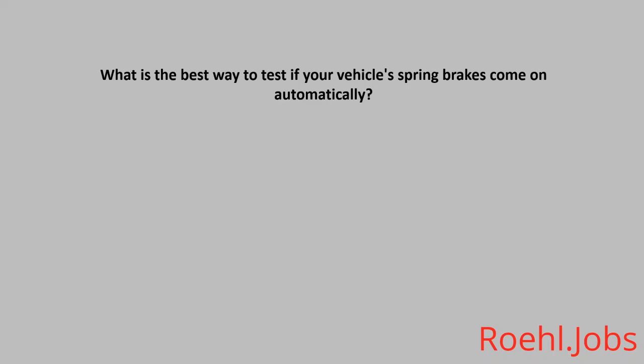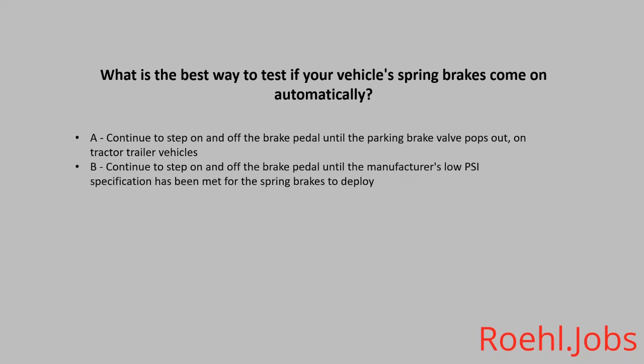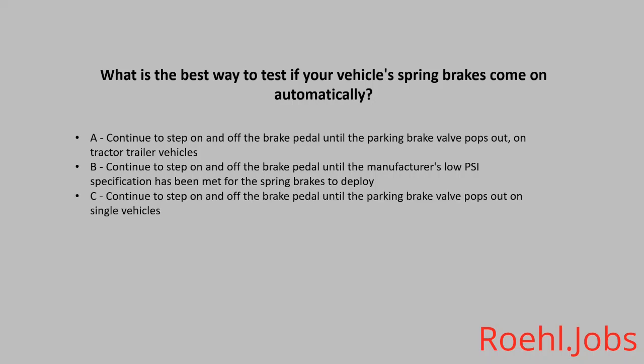What is the best way to test if your vehicle's spring brakes come on automatically? A. Continue to step on and off the brake pedal until the parking brake valve pops out on tractor-trailer vehicles. B. Continue to step on and off the brake pedal until the manufacturer's low PSI specification has been met for the spring brakes to deploy. C. Continue to step on and off the brake pedal until the parking brake valve pops out on single vehicles. D. All of the above. The answer: D, all of the above.